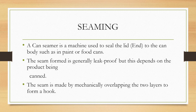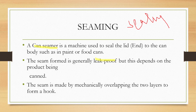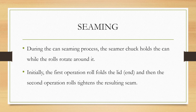Seaming is essentially sealing. When you put food into a can, you must seal it — that is the seaming process. A can seamer is used, which seals the lid to the body of the can. When seaming is proper there will be no leakage, giving a leak-proof can. The seam is made by mechanically overlapping two layers to form a hook.